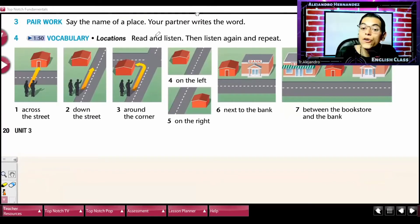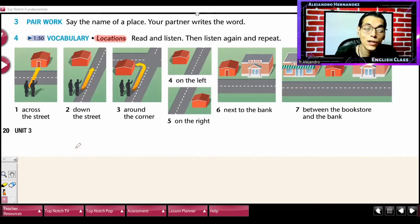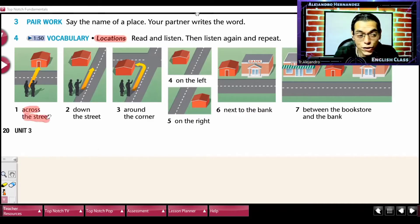Today, guys, we are going to implement and we are going to be using the prepositions of location. The prepositions of location that we are going to be looking at, it is across the street, que es cruzando la calle.